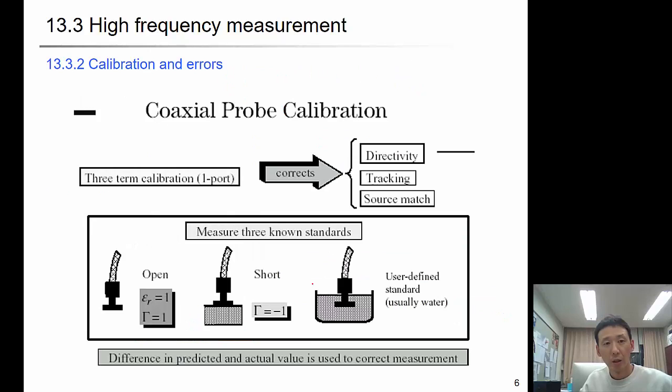So then how do we calibrate? It's the same concept with the low-frequency LCR circuit analysis. Because we know that if it's just free space, just air or vacuum space, then the reflection coefficient will be 1, and the relative permittivity will also be 1. So we can calibrate using that.